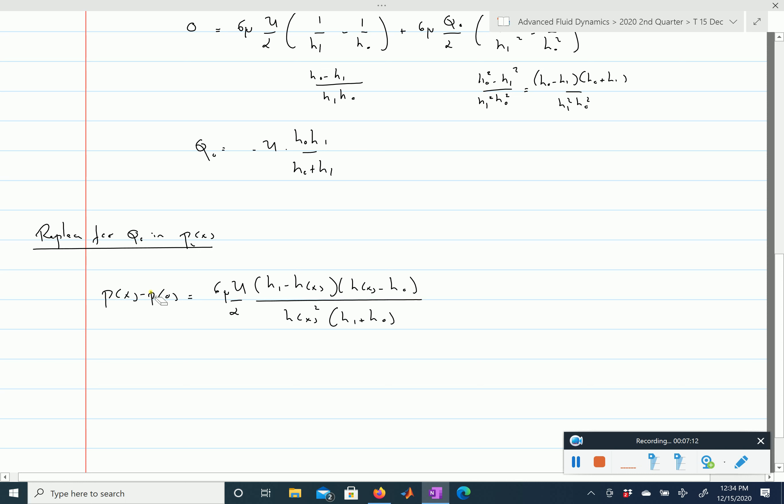So you can plot now the pressure distribution, and note, indeed, when x is equal to 0, h is going to be equal to h0, so this is going to be equal to 0, and therefore px is going to be equal to p0, and when x is equal to l, this hx is going to be equal to h1, and therefore this is again going to be equal to 0, and therefore our pressure here is again going to be equal to p0.